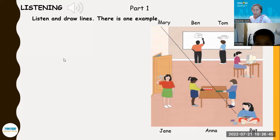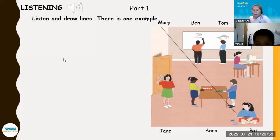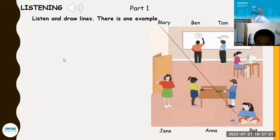Now listen to Part One again. One. Where's Tom? He's drawing a picture on the board. There are two boys drawing. Which one is Tom? He's drawing a car. Oh yes, I can see him now.